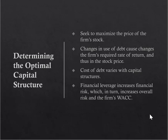When determining your optimal capital structure, you seek to maximize the price of the firm's stock. Generally, the premise is that managers' job is to maximize the firm's stock price. Changes in the use of debt cause changes in the firm's required rate of return and thus in the stock price. The more debt Unilate added, the more they needed to issue additional common stock, raising the required rate of return. Financial leverage increases financial risk, which increases overall risk and the firm's required weighted average cost of capital.